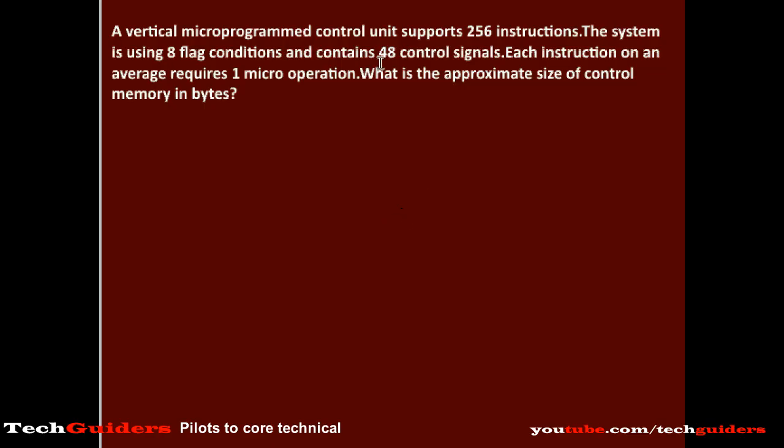The vertical micro-programmed control unit supports 256 instructions. The system is using 8 flag conditions and contains 48 control signals. Each instruction on average requires 1 micro-operation. What is the approximate size of the control memory in bytes?